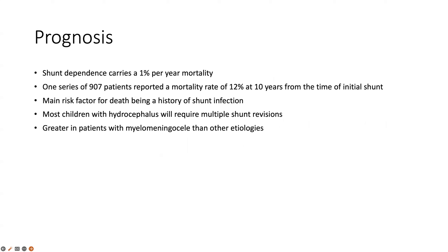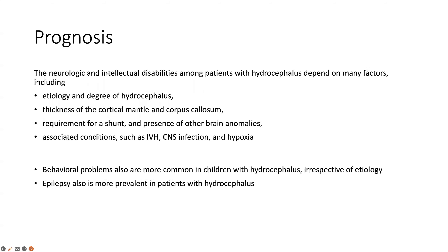Regarding prognosis, shunt dependence carries approximately 1% per year mortality. A series of over 900 patients reported 10–12% mortality at 10 years from initial shunt placement, with shunt infection being the main risk factor. Most children require multiple shunt revisions; risk is greater in myelomeningocele due to higher infection predisposition. Neurological and intellectual disability depends on etiology and degree of hydrocephalus, cortical mantle thickness, corpus callosum integrity, presence of other brain anomalies, IVH, CNS infection, and hypoxia. Behavioral problems and epilepsy are more prevalent, likely due to diffuse white matter injury.